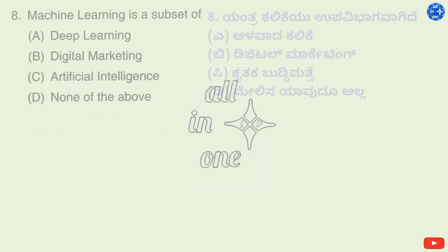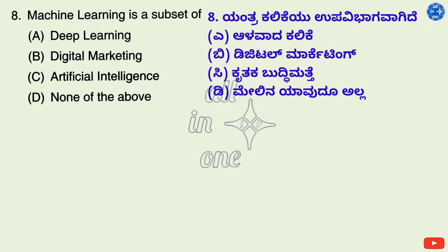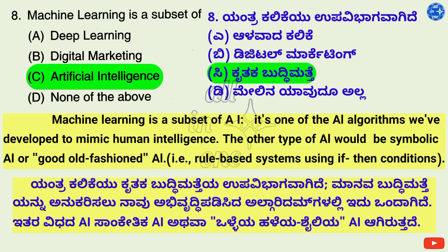Question 8. Machine learning is a subset of — Options: A. Deep learning, B. Digital marketing, C. Artificial intelligence, D. None of the above. Right answer is C: Artificial intelligence. Machine learning is a subset of artificial intelligence. It's one of the AI algorithms developed to mimic human intelligence. The other type of AI would be symbolic AI or good old-fashioned AI.